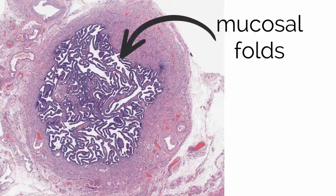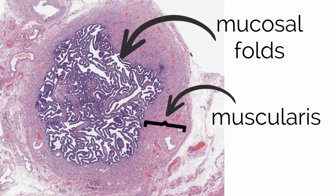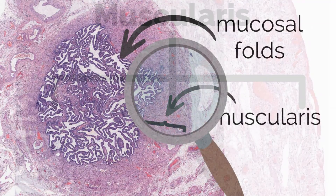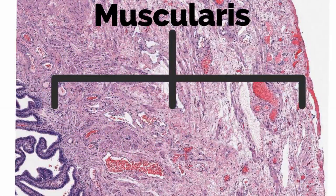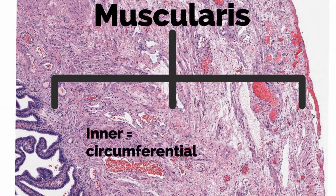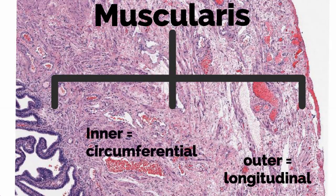Zooming out, you can see the presence of mucosal folds. Deep to the mucosa is the muscularis layer, which is composed of two layers. The inner layer is circumferential, while the outer layer is composed of longitudinal smooth muscle, which produces wave-like contractions assisting in transport.